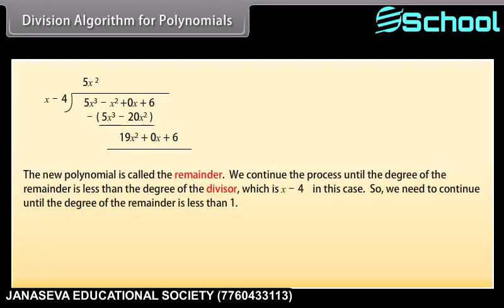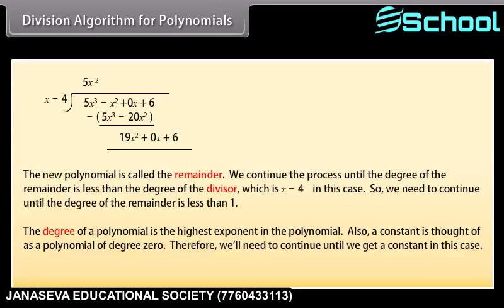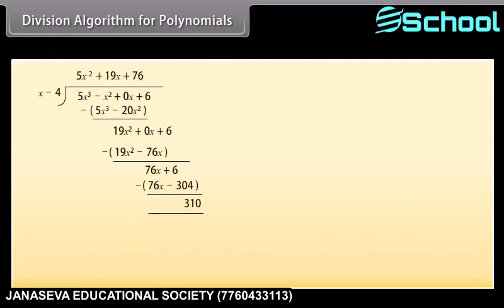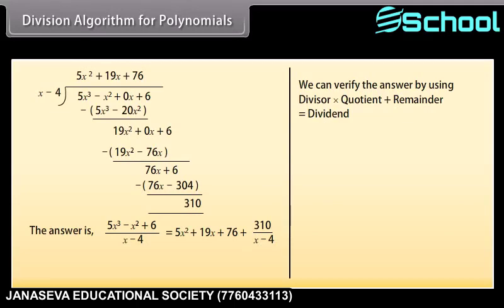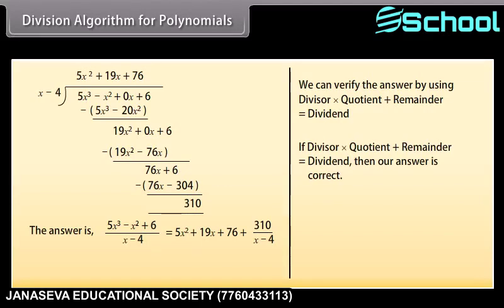We need to continue until the degree of the remainder is less than 1, since the divisor is x minus 4. The degree of a polynomial is the highest exponent, and a constant is a polynomial of degree 0. So we continue until we get a constant. We can verify the answer using: divisor times quotient plus remainder equals dividend. If this holds, then our answer is correct.